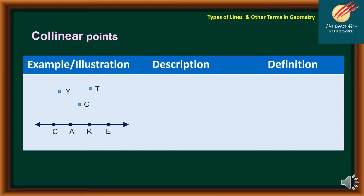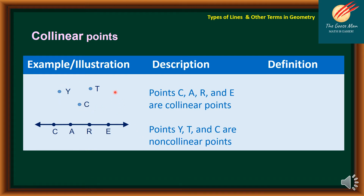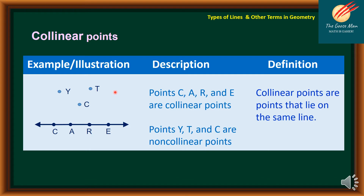The first term that we will talk about is collinear points. Based on our illustration on the left side, we have points Y, T, C as well as points C, A, R, E. Points C, A, R, E are collinear points because they are lying on the same line. However, points Y, T, and C are non-collinear points because they are not lying on one line. Collinear points are points that lie on the same line.